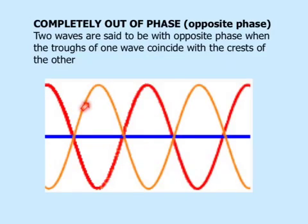These two waves are completely out of phase with each other, or they are of opposite phase. You can see that the crest of this wave coincides with the trough of the other wave, and so on.